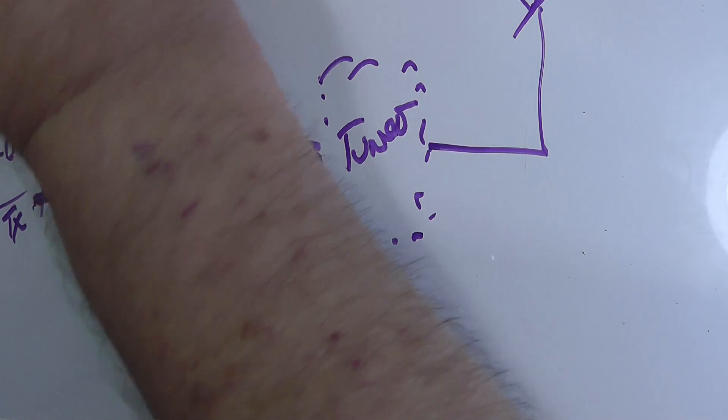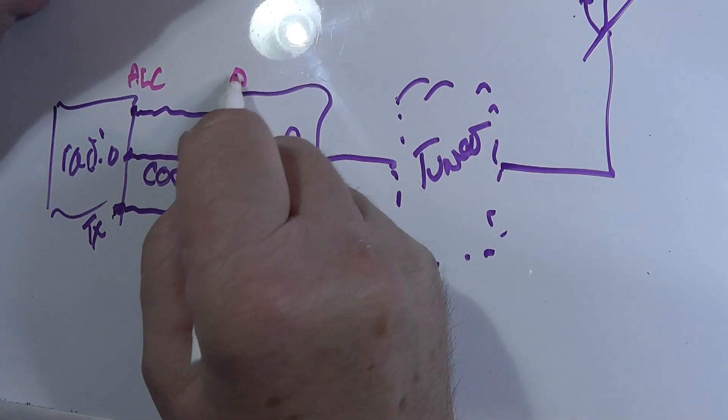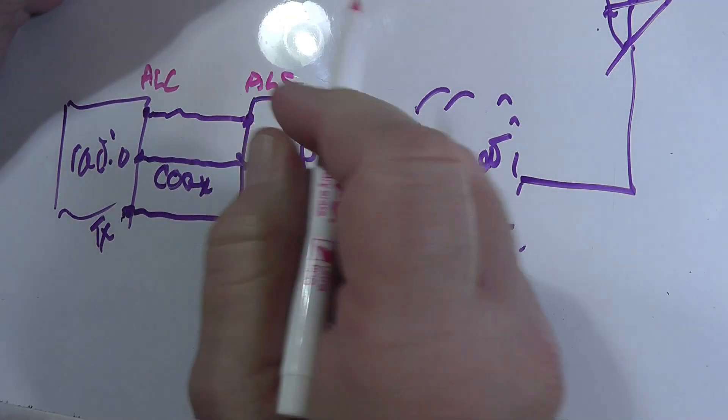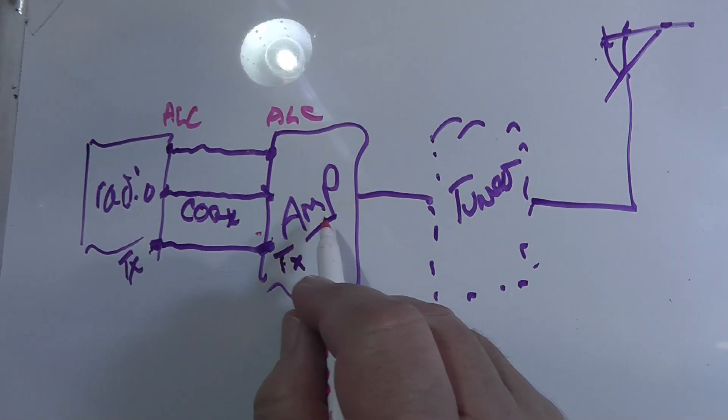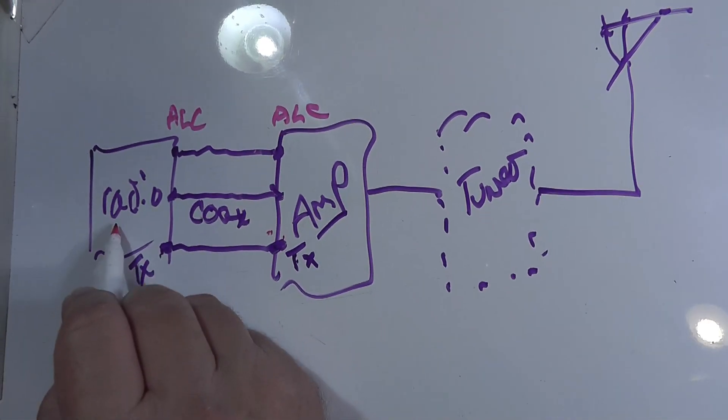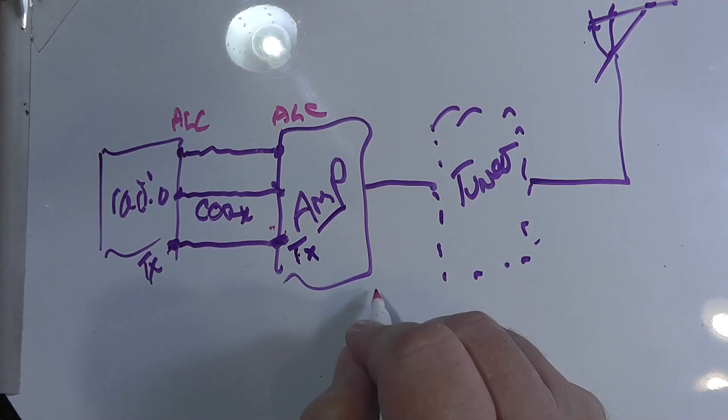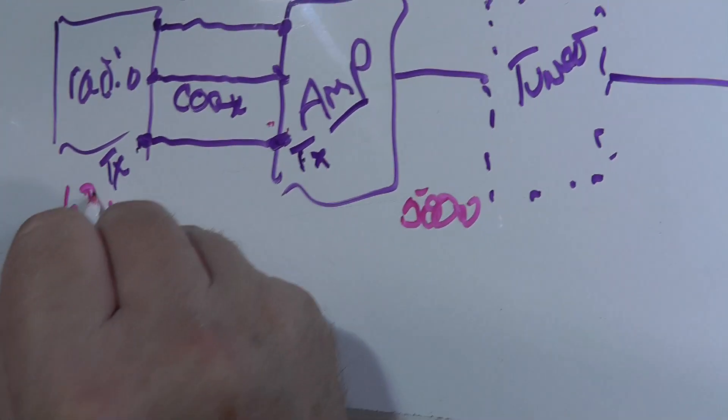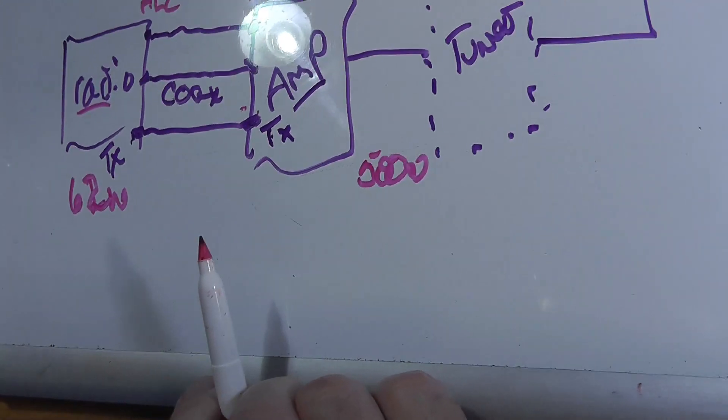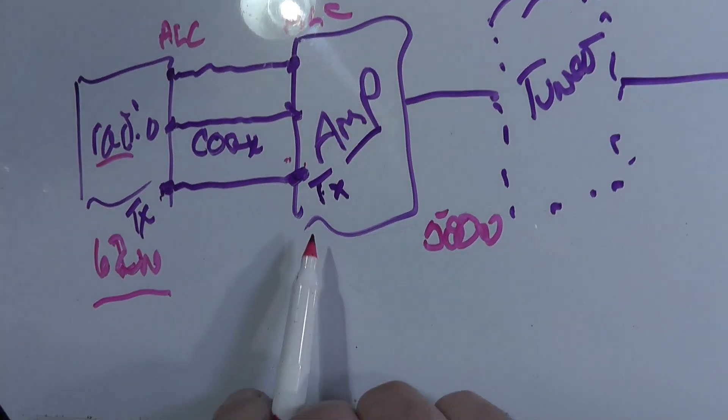Right here. And this is a very, very important one. And it's called ALC. Now the amplifier that I just showed you doesn't use this one. Now the amplifier can do full amplification without the radio going all the way to 100 watts. On my amplifier, I can get full 500 watt output with 62 watts out from the radio. And there's no ALC, so I have to manually set it to 62 watts.